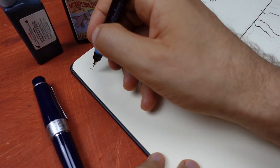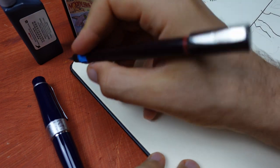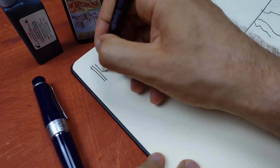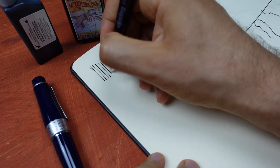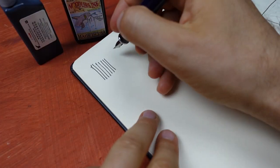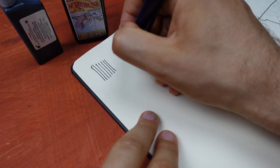Let's draw some lines and test for smudging. This is Rotring ink. I'll draw some parallel lines. And with Noodler's ink.